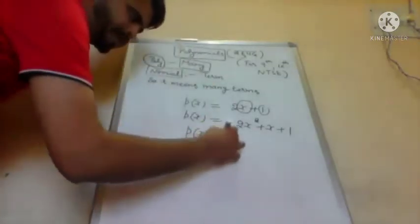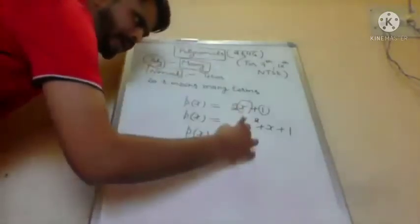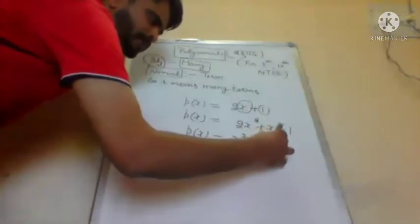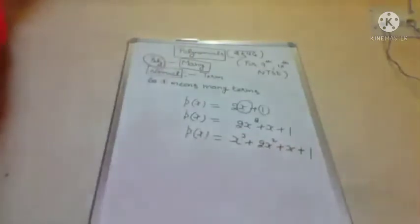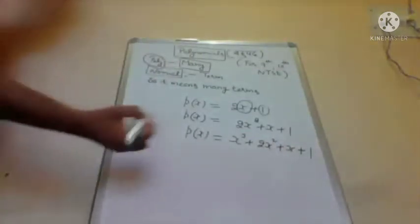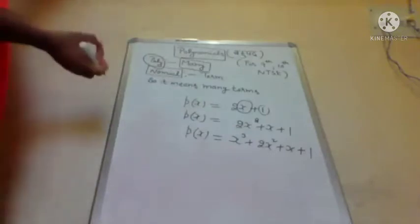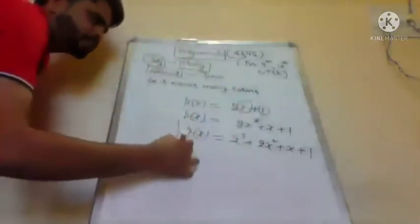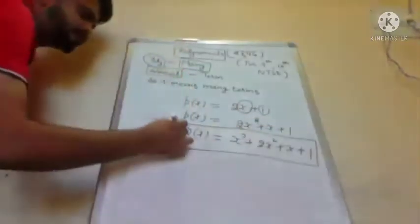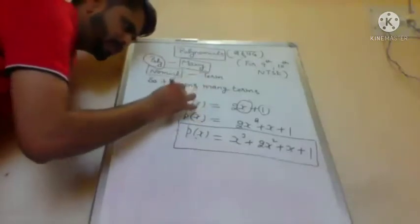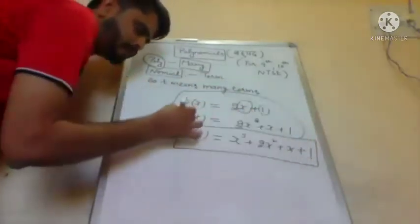Aap dekh sakte ho what is cubic polynomial. Agar main yahan likhun x³ + 2x² + x + 1, so it is a cubic polynomial because yahan pe jo degree hai wo 3 hai. Degree means x ki highest power in the given polynomial. Toh bete, cubic polynomial is baar 10th class ke syllabus se ja chuka hai — yeh aapne nahi karna. Simply aapne yahi do cheezein karni hain: linear polynomial aur quadratic polynomial.